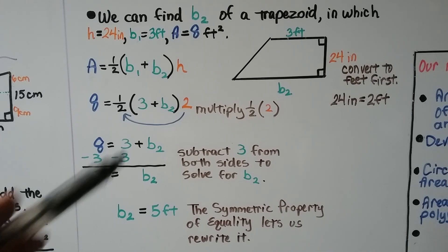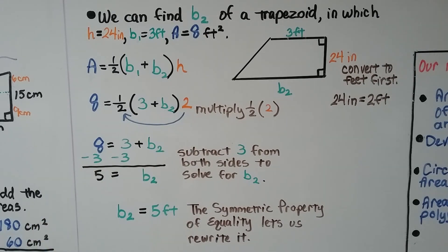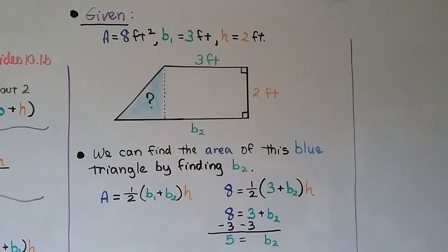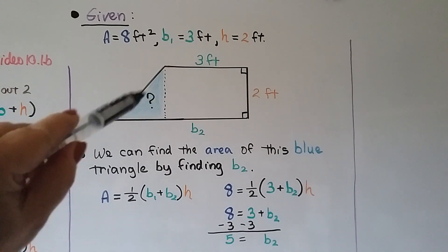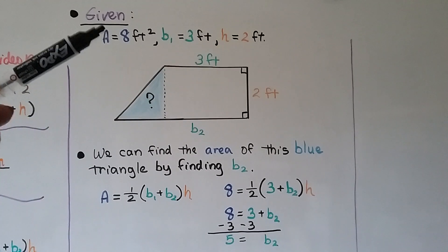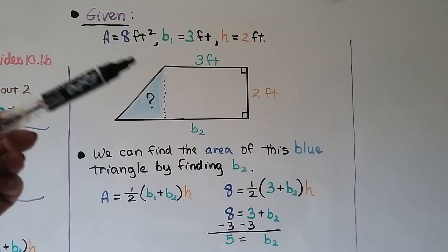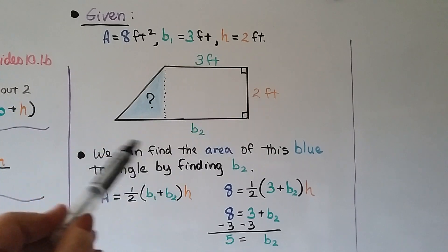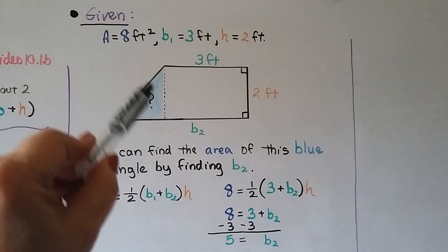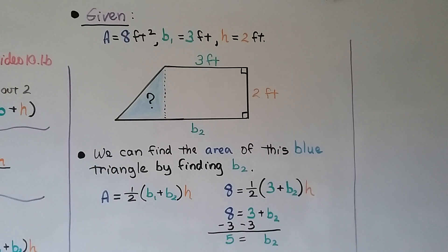So now what if the problem asks you for the area of this triangle here? What if we had the exact same problem except there was a dotted line here and it wanted us to find this area? And it gave us that the area was 8 feet, just like in our previous example, it's 8 feet squared and that b sub 1 is at 3 feet. We know this is 2 feet. We don't know what b sub 2 is. It wants us to find this area. We do the exact same thing we did before.